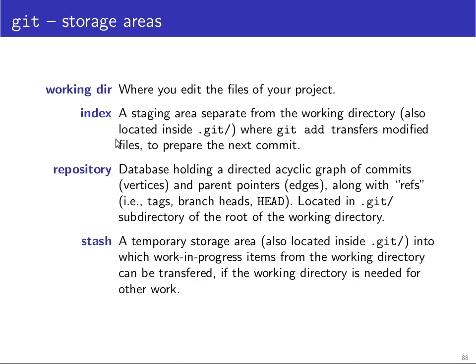Whenever you do a commit, you move information from the index to the repository. Independent of these three, there is also a temporary storage area called the stash. This can be useful if you have some work-in-progress items that you want to get out of the way quickly, but they are not in a finished enough stage to actually save them in something like a branch. If you just want to clean your working directory, you can move every change you have made so far into the stash area, then do something else, and then move the changes back out of the stash area.